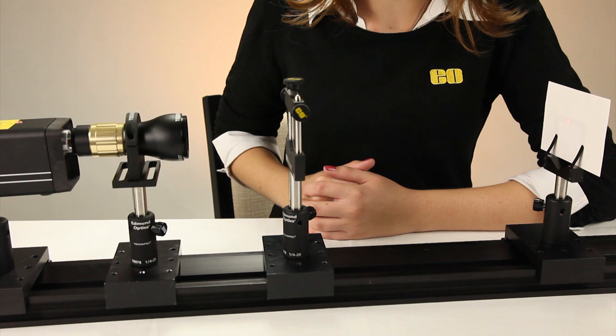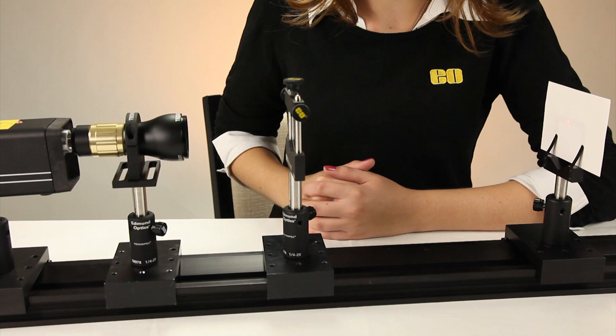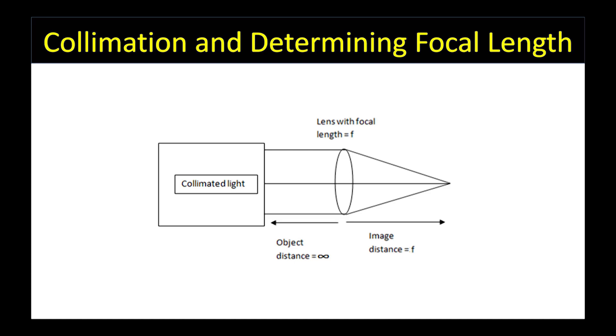Alternatively, if collimated light enters a lens, it focuses at a distance equal to one focal length. So if you have a lens with an unknown focal length, you can use collimated light to determine its focal length.